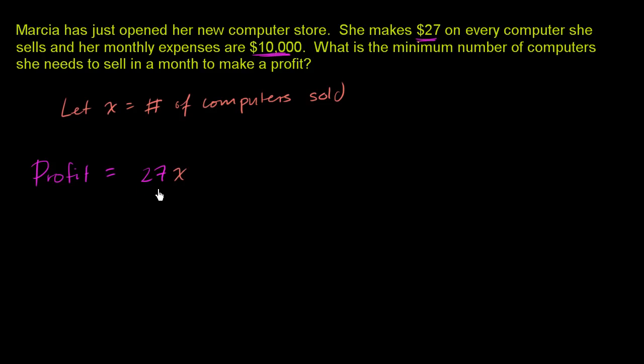But we're not done yet. She still has expenses of $10,000 per month, so we're going to have to subtract out the $10,000. What we care about is making a profit. We want this number right over here to be greater than zero. So let's just think about what number of computers would get us to zero, and then maybe she needs to sell a little bit more than that. So let's see what gets her to break even.